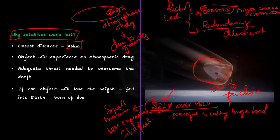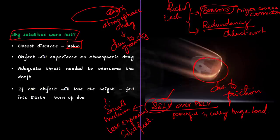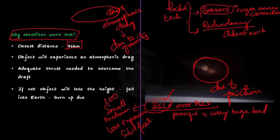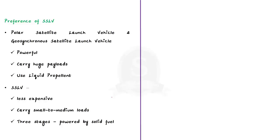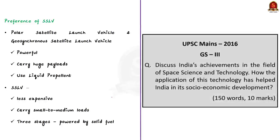That is all about this news article discussion. We saw in detail about the SSLV-D1 EOS-2 mission, the purpose of the satellites, the reason for failure of the mission, and why SSLV was preferred by ISRO. Now let us move on to the next news article discussion.